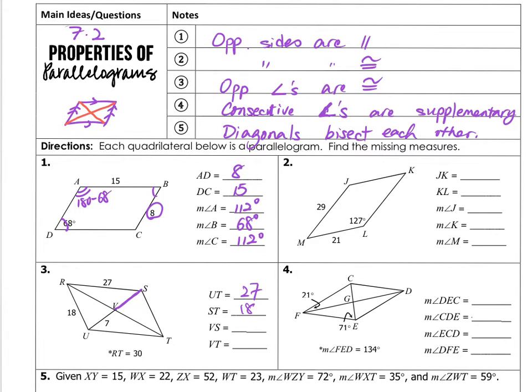VS must be congruent to UV at 7, and VT must be, be careful here, RT is given at 30. VT must be half of that at 15. Now I want you to pay specific attention that on the diagonals, notice that they bisect each other but it doesn't mean that they're congruent with each other.